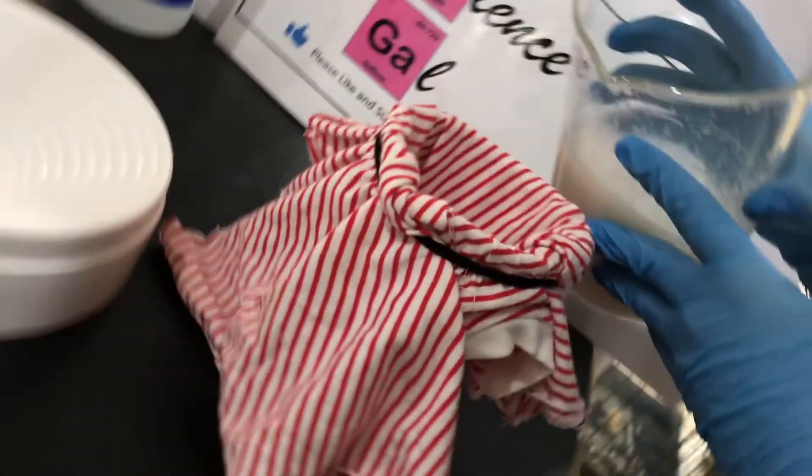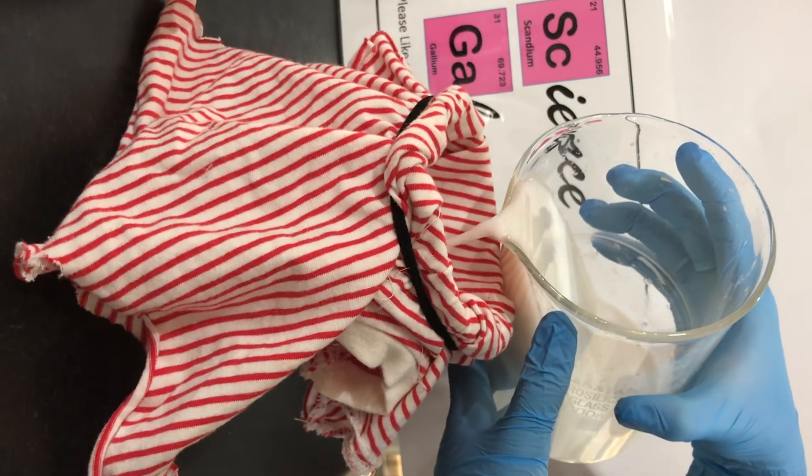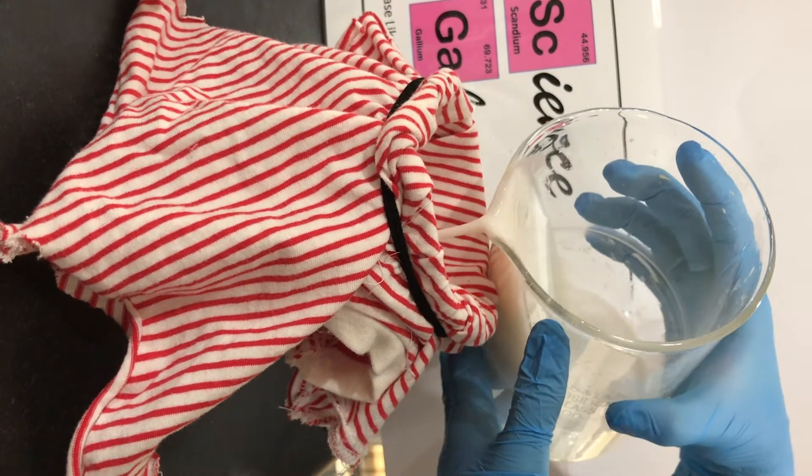Now to separate the remainder of the calcium hydroxide, I used a cloth filter. Don't forget to prime it before by running some water through it. Pour all of it into the filter.